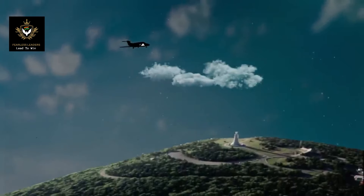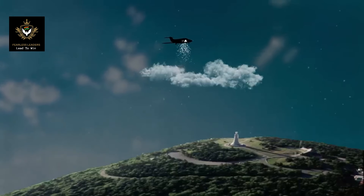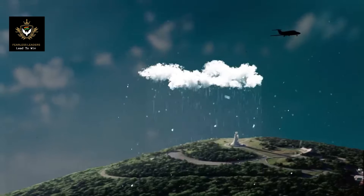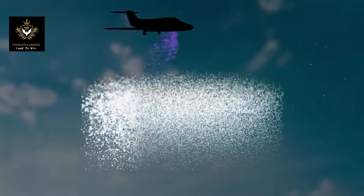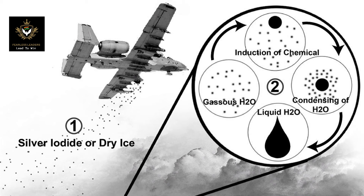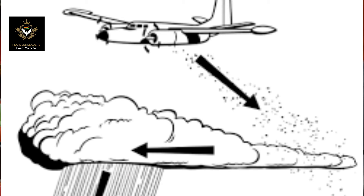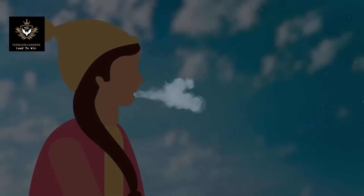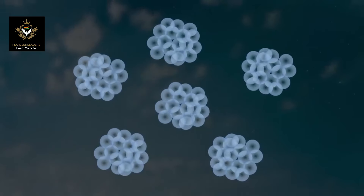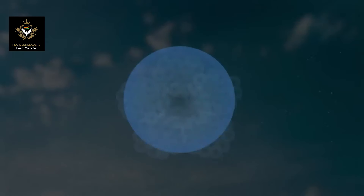Cloud seeding is undertaken by dispersing substances into the air that serve as cloud condensation or ice nuclei. Common agents include silver iodide, potassium iodide, and dry ice, with hygroscopic materials like table salt gaining popularity due to their ability to attract moisture. Essentially, silver iodide or dry ice is injected into clouds, which already contain water vapors. These agents attract the water vapor particles, make them heavy, and bring them down as precipitation — and we have rainfall.